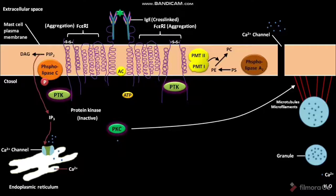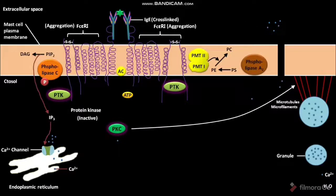This accumulation of PCs increases the membrane fluidity of the plasma membrane and facilitates the formation of calcium ion channels. The calcium ions present in the extracellular space then pass through these calcium ion channels and reach the mast cell's cytosol. This passing of calcium ions from the extracellular space into the cytosol is called the influx of calcium ions.